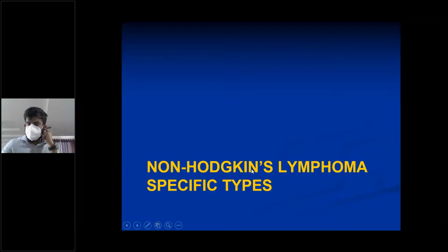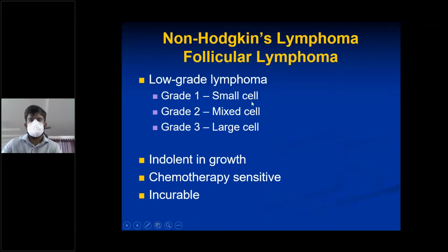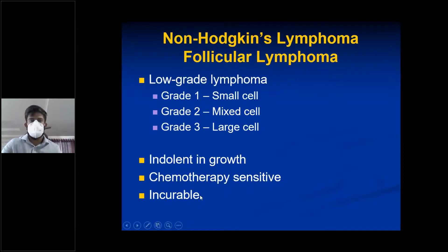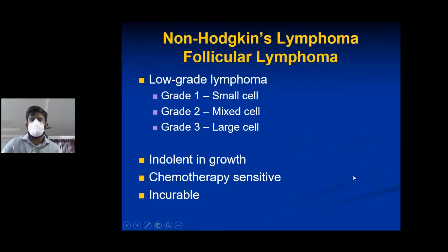Specific subtypes of non-Hodgkin's lymphoma: follicular lymphoma is a low-grade, indolent lymphoma. There are grade 1 (small cell), grade 2 (mixed cell), and grade 3 (large cell). It is chemotherapy-sensitive but incurable, as the response to chemotherapy is not sufficient to eradicate it. It is a slow-growing lymphoma.